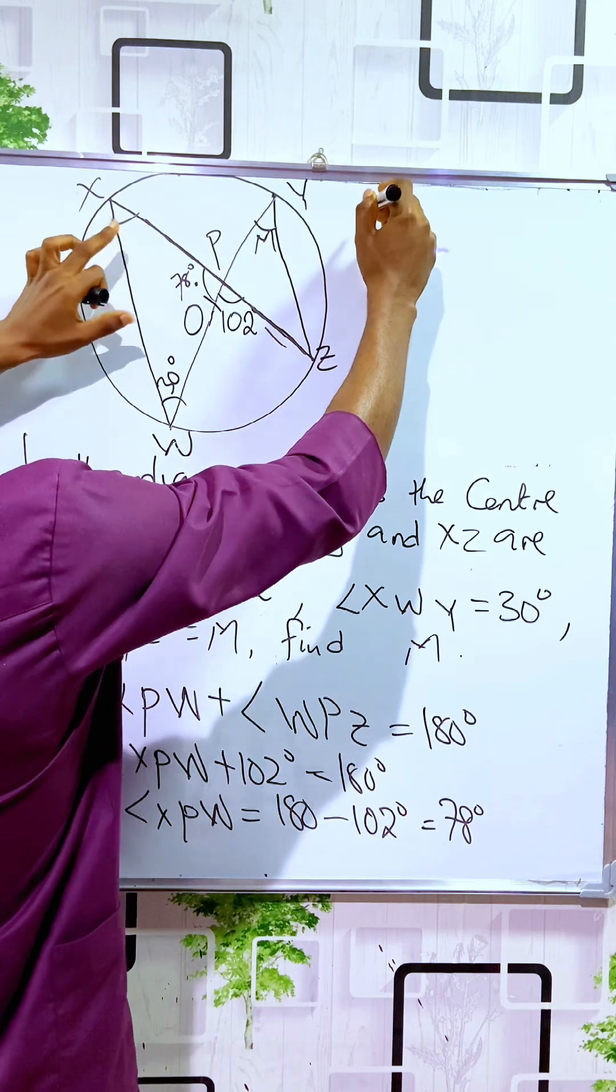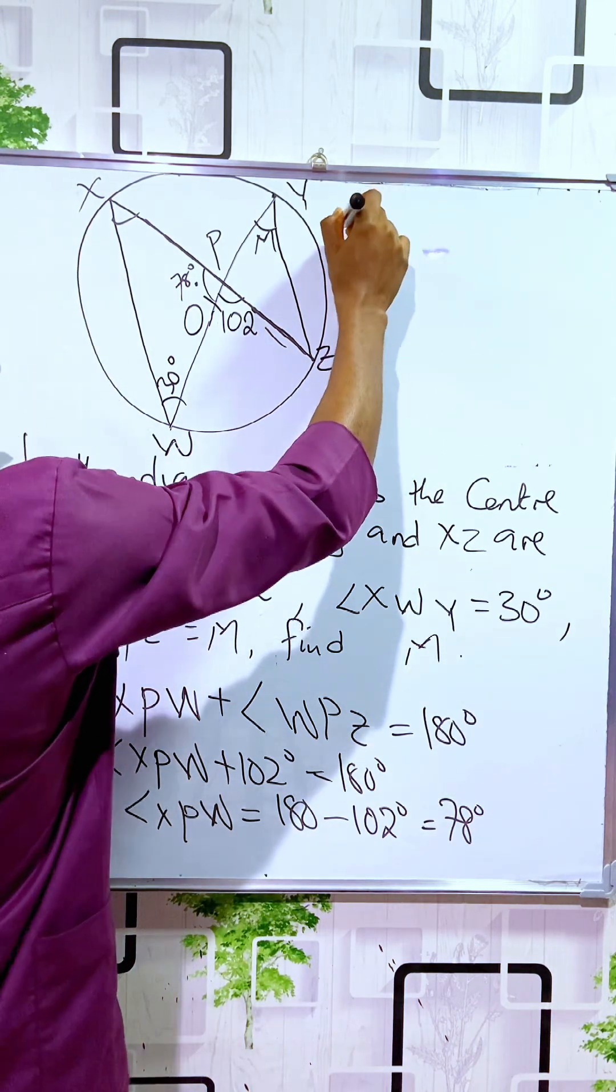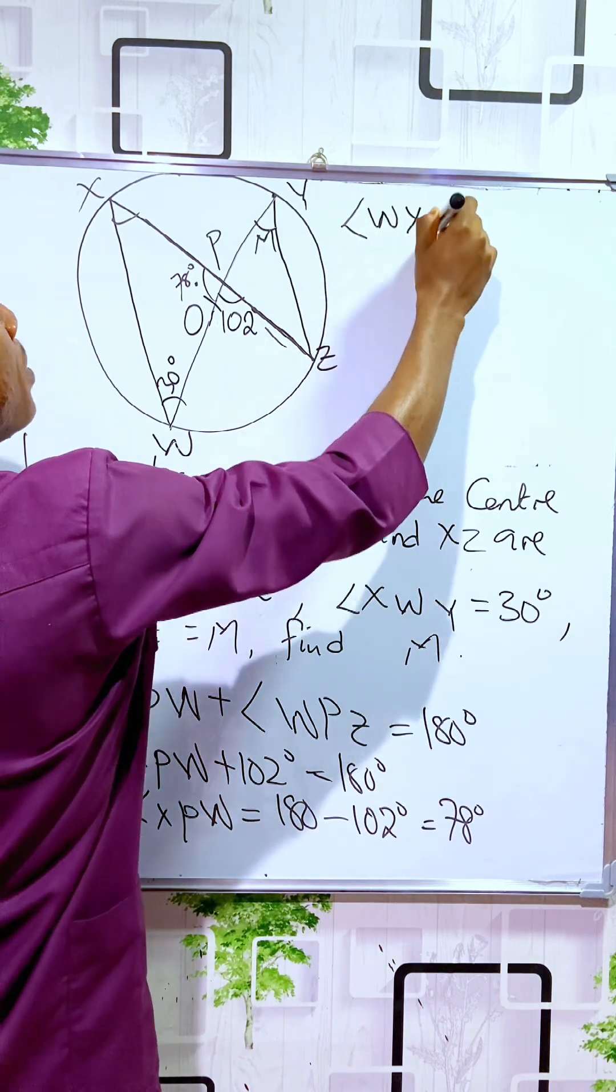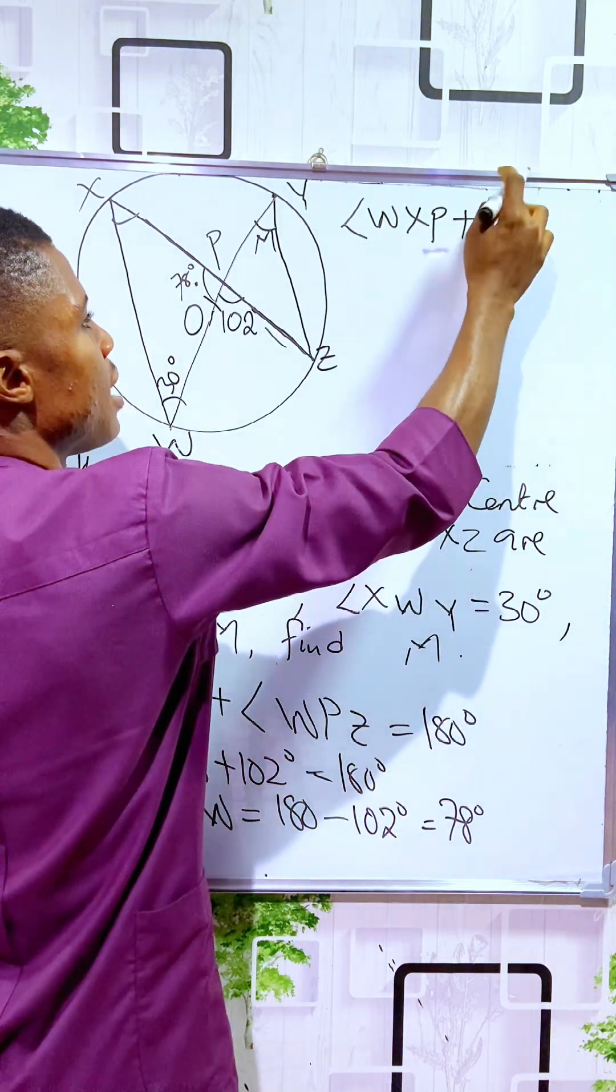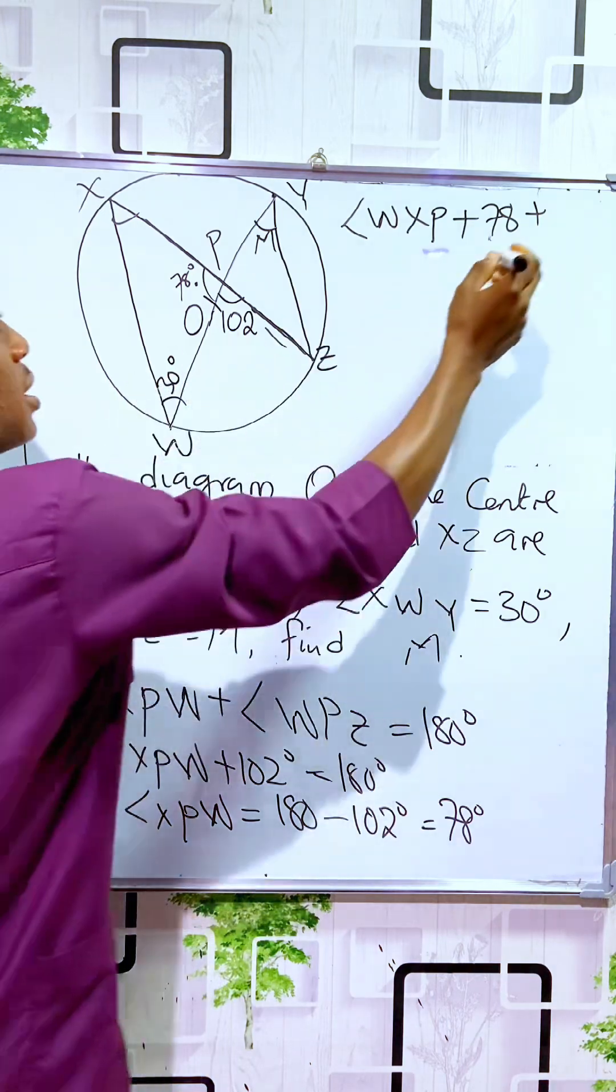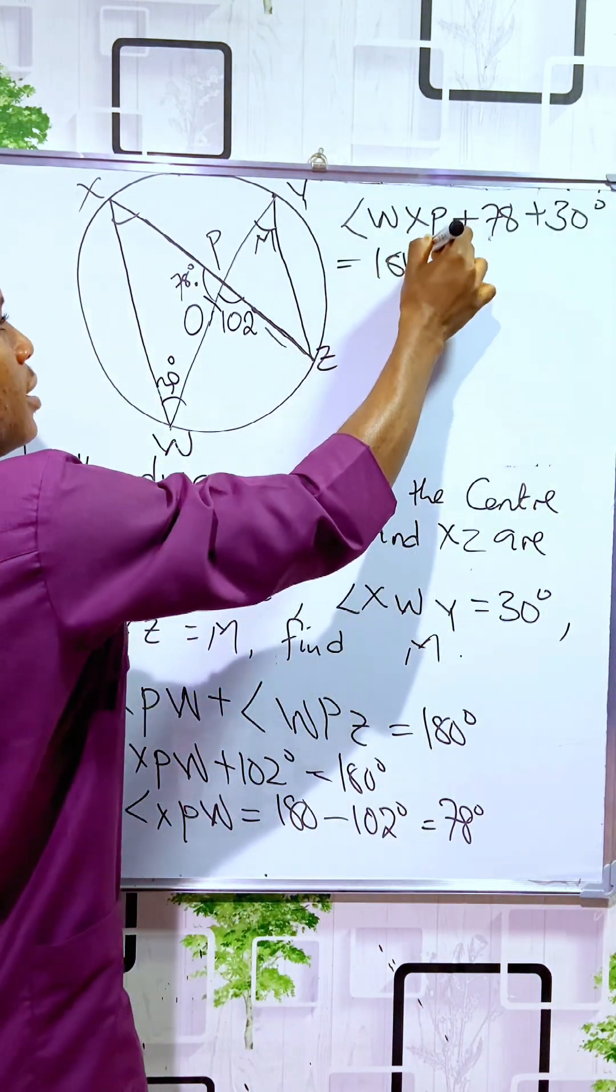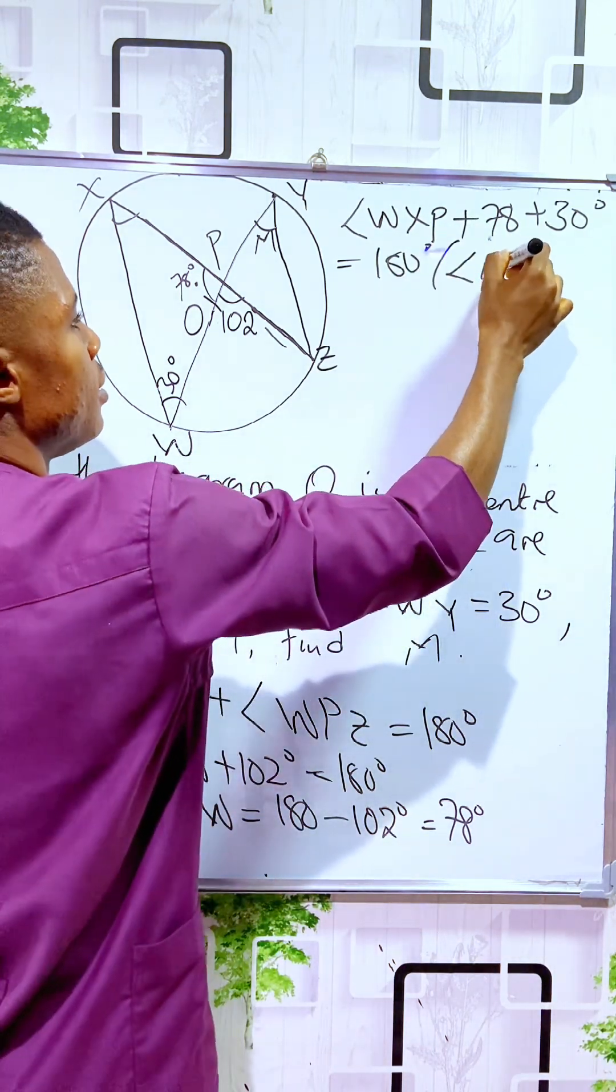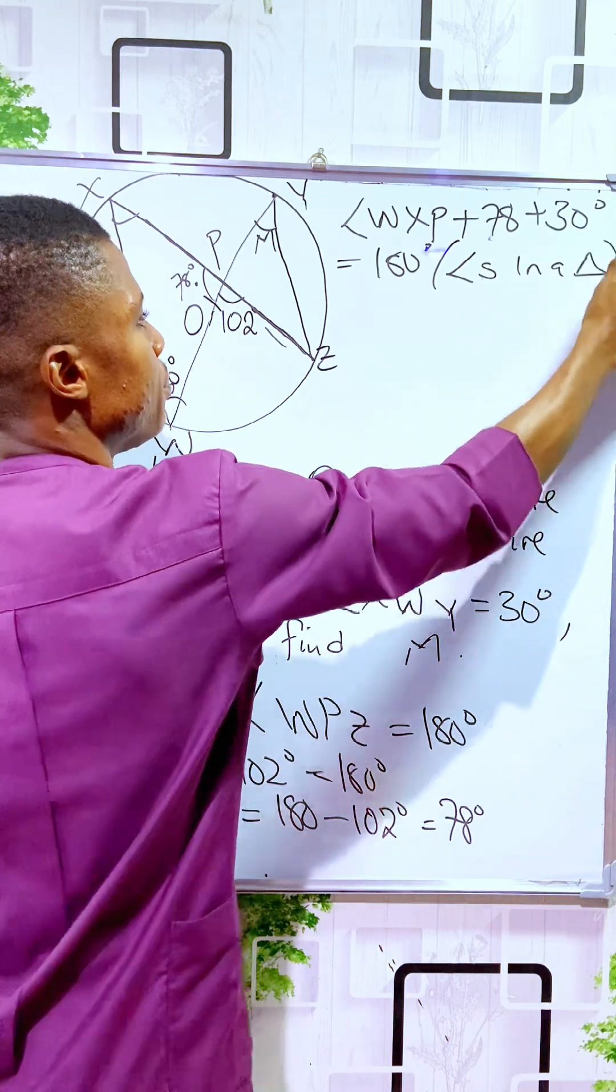Angle WXP plus 78 degrees plus 30 degrees equals 180 degrees, because these are angles in a triangle.